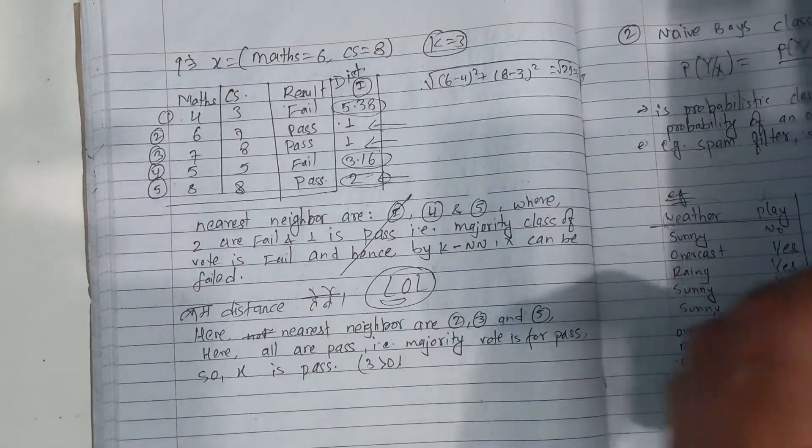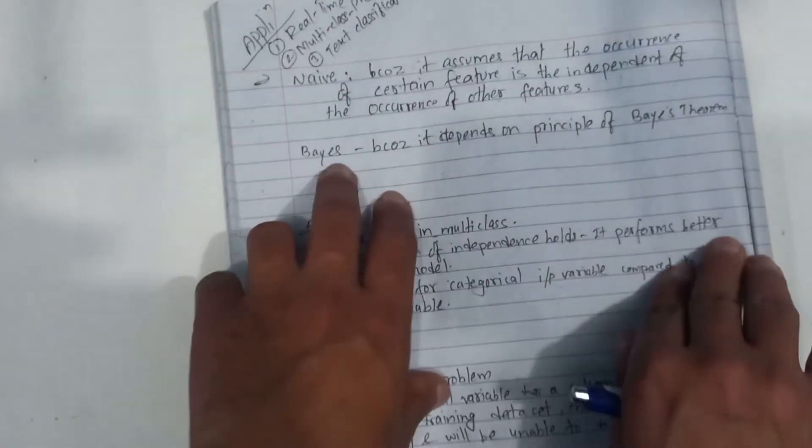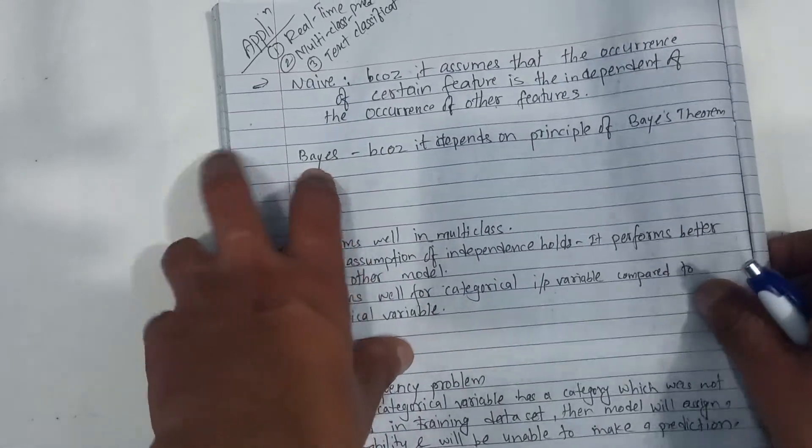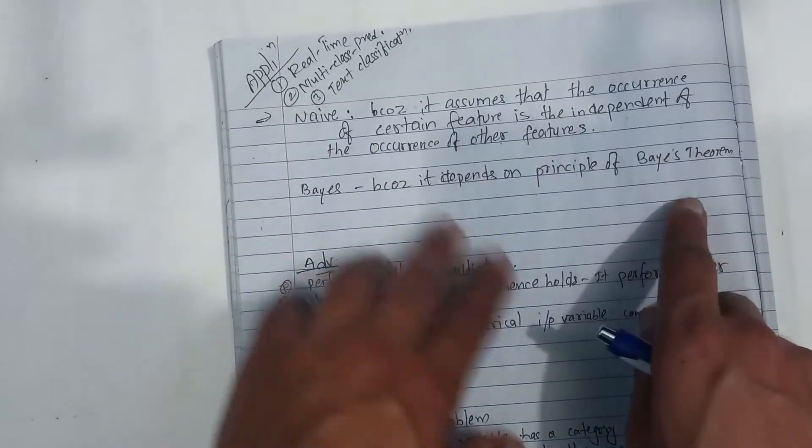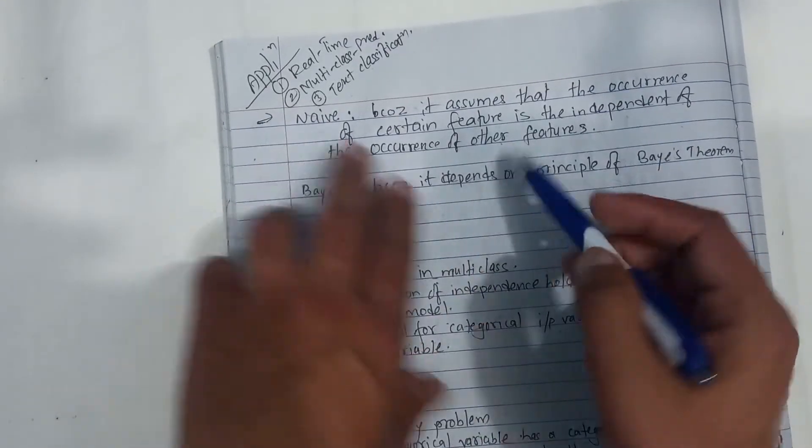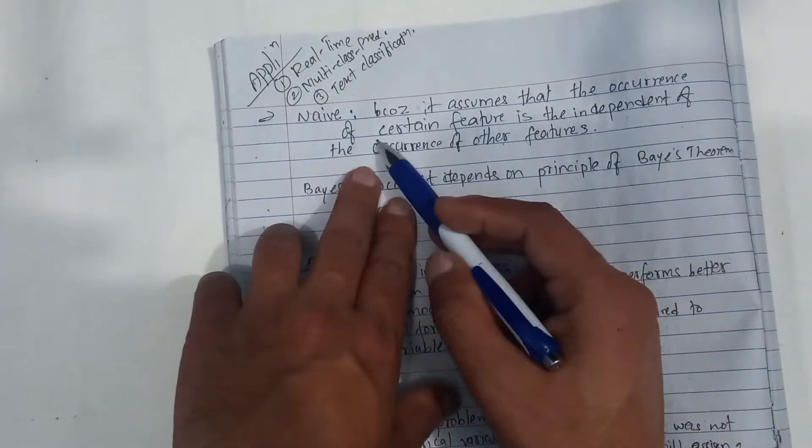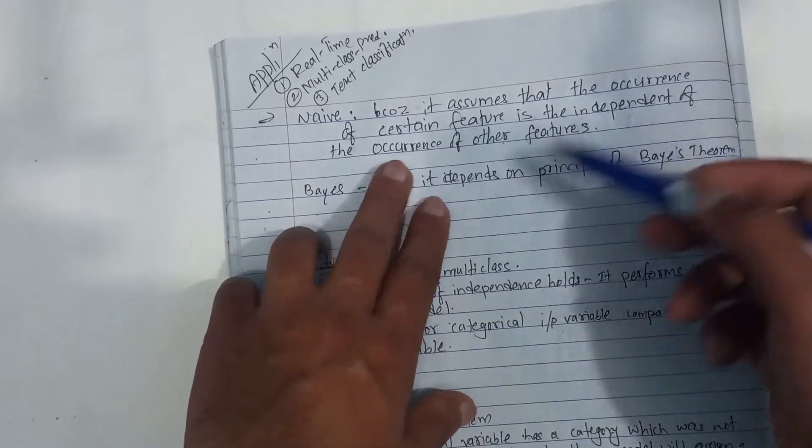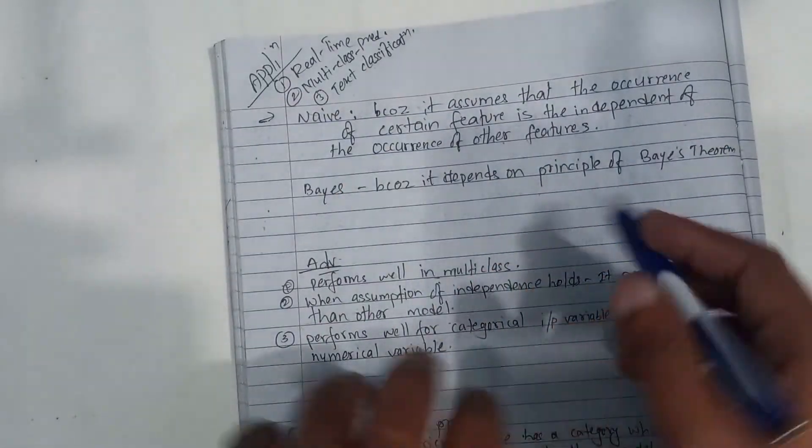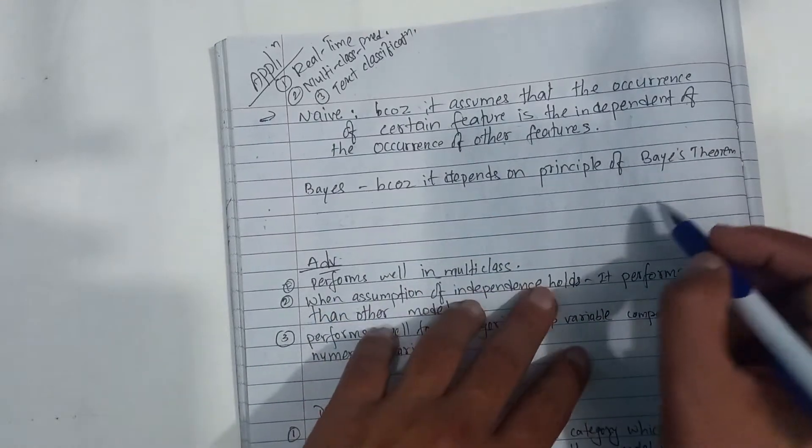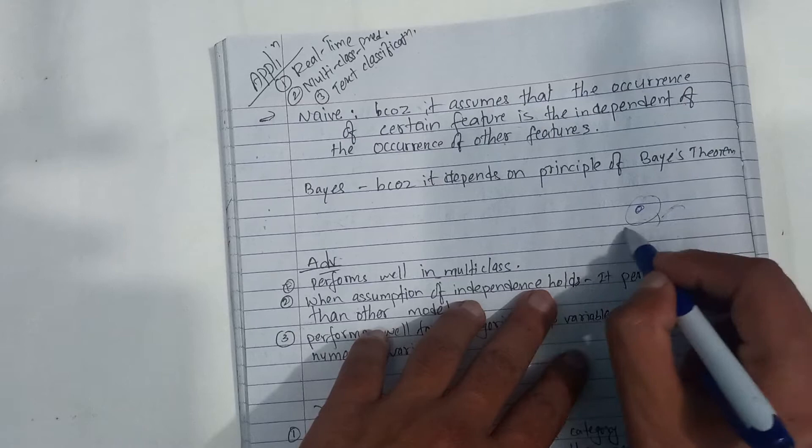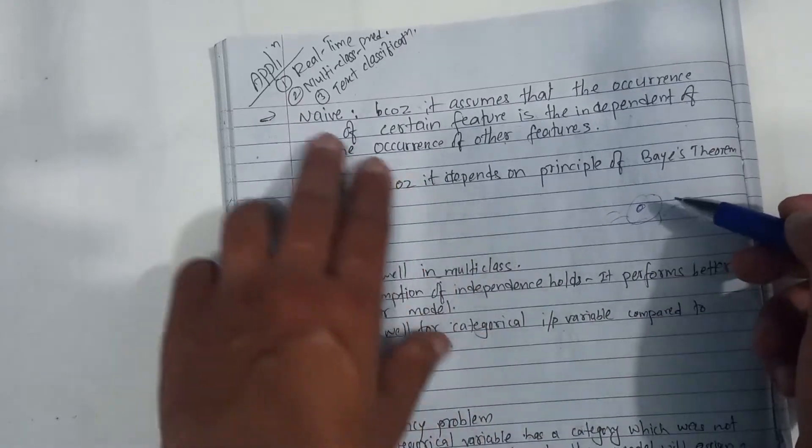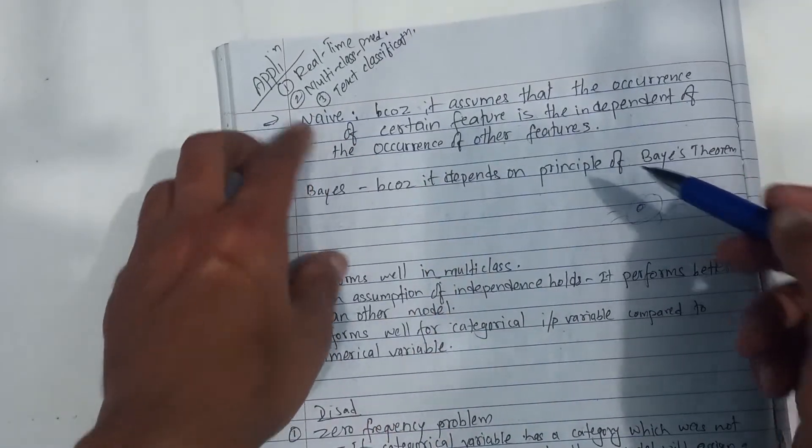So why is it called Naive Bayes? Because it assumes that the occurrence of a certain feature is independent of the occurrence of other features. This means that different features are independent of each other.